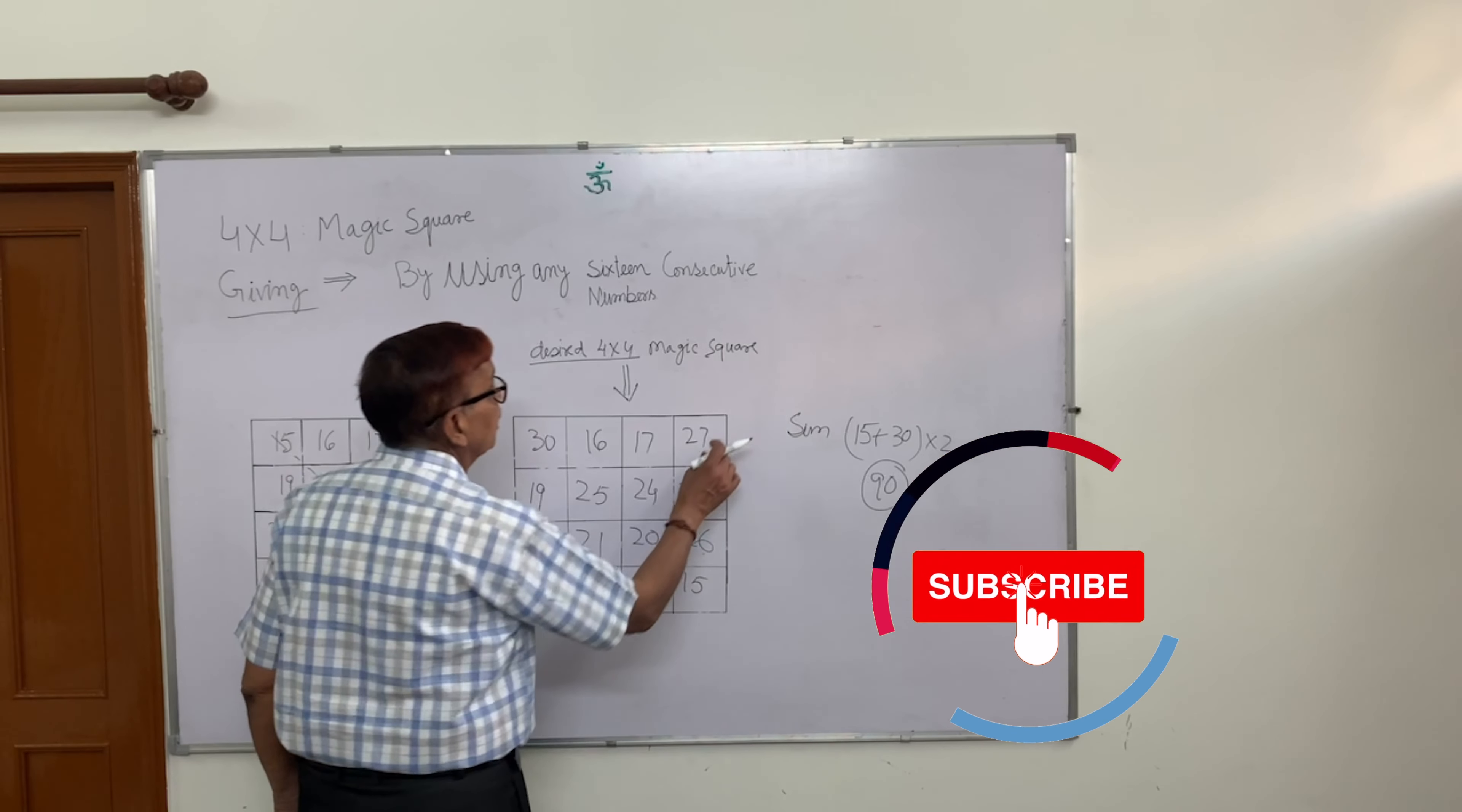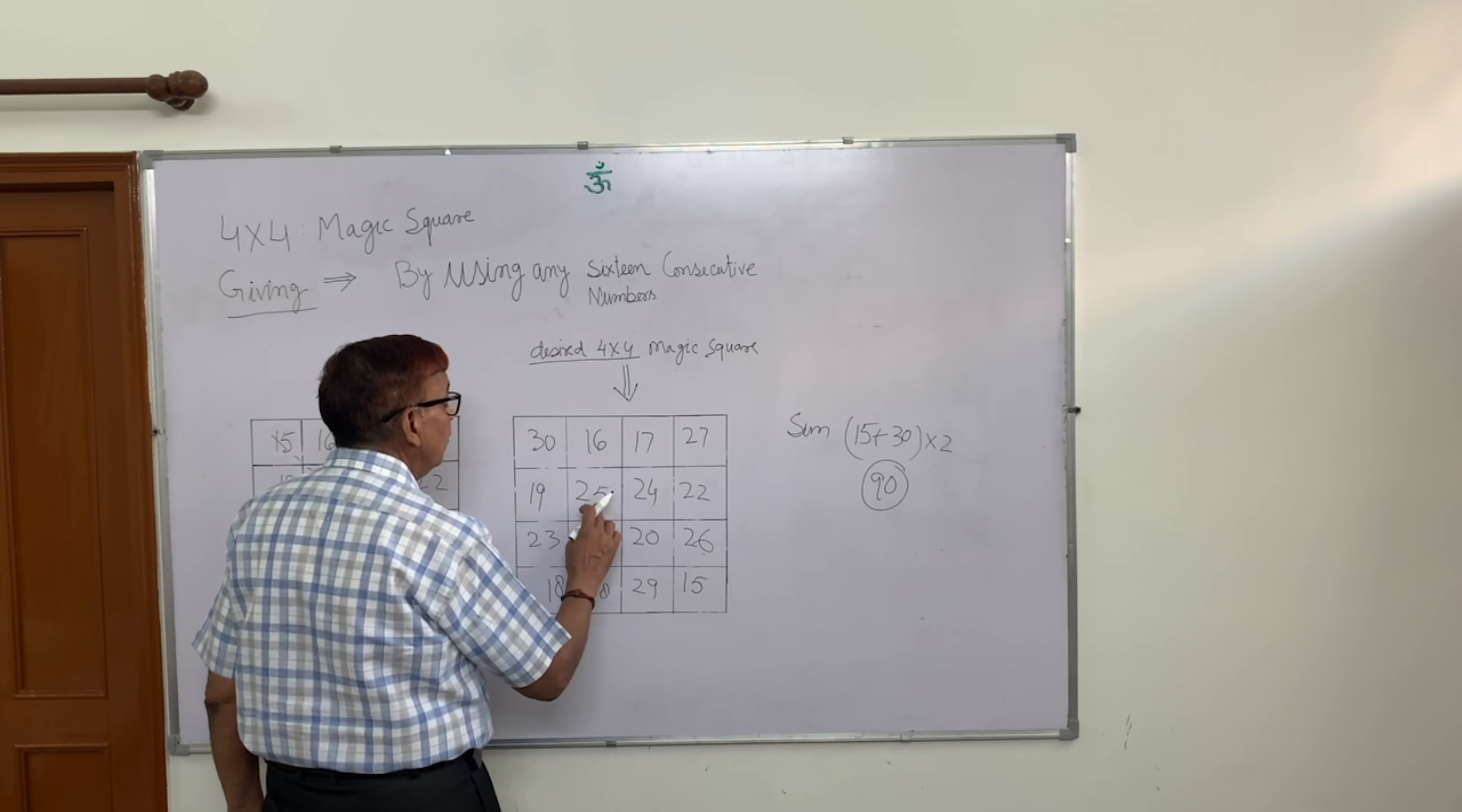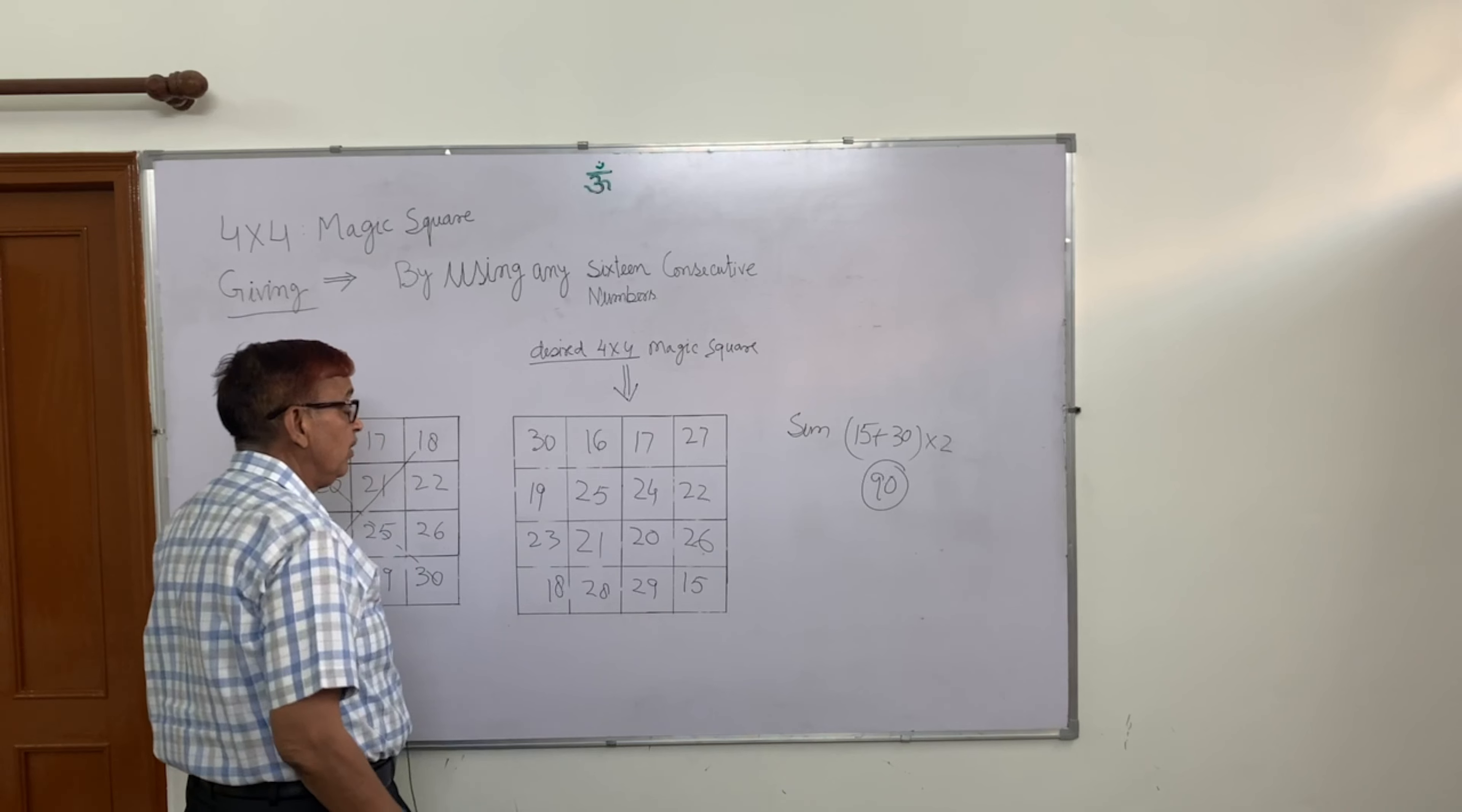90 will come. How do you see? 27 and 29, 26 to 15, 25, 27 and 29. Do anyone. 25, 27 and 29.